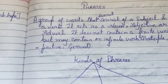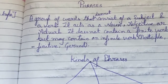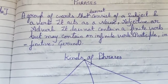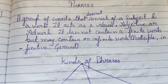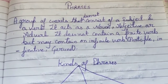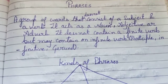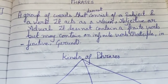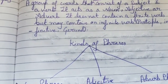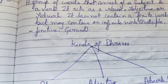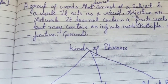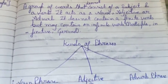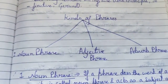Good morning dear students, today we are going to start with phrases. This video is in continuation with the previous video where we discussed clauses and phrases. A phrase is a group of words that does not consist of a subject and predicate. It acts as a noun, adjective, or adverb in a sentence. It does not contain a finite verb but may contain a non-finite verb in the form of a participle, gerund, or infinitive.